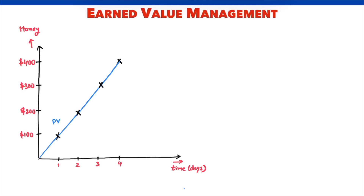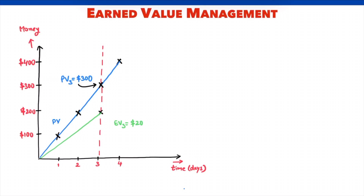The project starts and now we are at the end of the third day. The planned value at the end of the third day is $300. This is the earned value plot. The earned value at the end of day 3 is only $200. Completed work is less than the planned work — we are behind schedule.